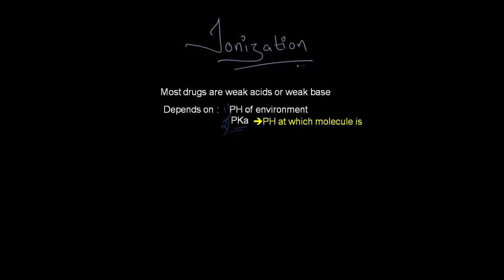Most drugs are either weak acids or weak base. That means they exist in ionized or non-ionized form. The degree of ionization of a drug depends on two things: the first being the pH of environment in which the drug is, the second being the pKa value of the drug.